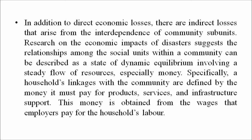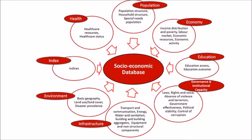Specifically, a household's linkage with the community can be defined by the money it must pay for products, services, and infrastructure support. This money is obtained from the wages that employers pay for households' labour. Similarly, the linkages that a business has with the community are defined by the money it provides to employees, suppliers, and infrastructure in exchange for inputs such as labour, material, services, electric power, fuel, water, wastewater, telecommunication, and transportation.